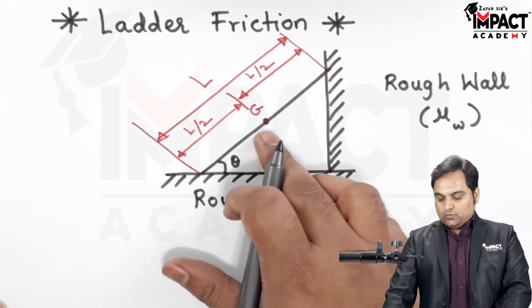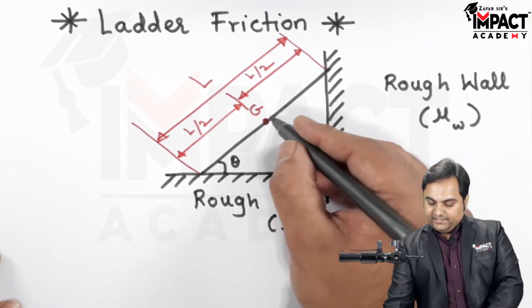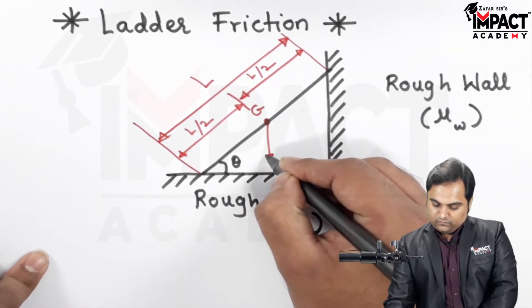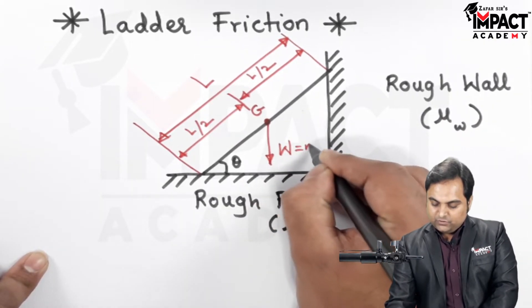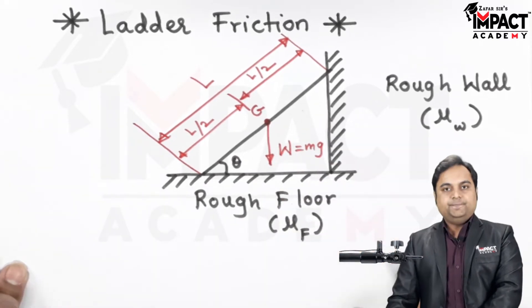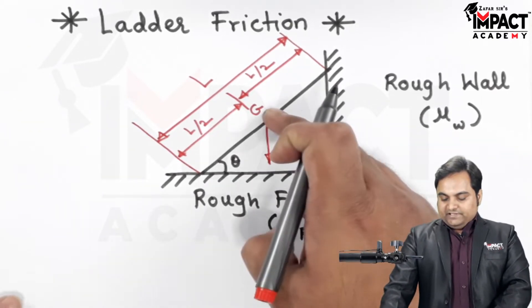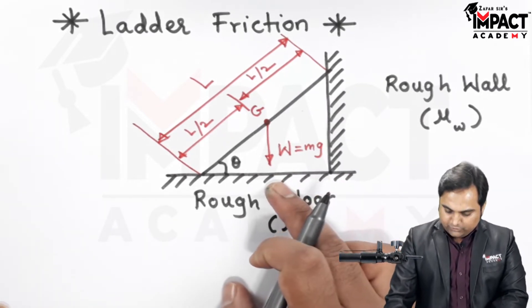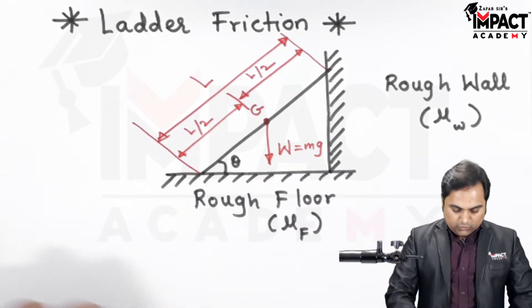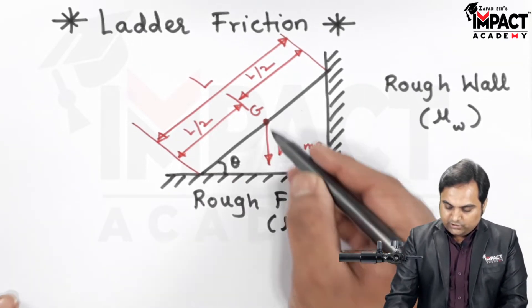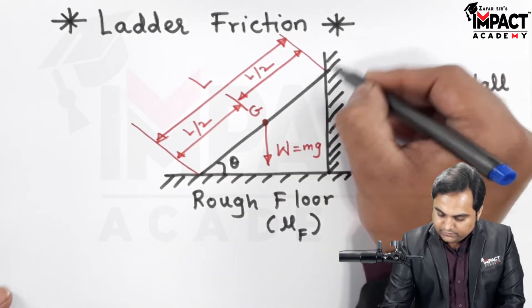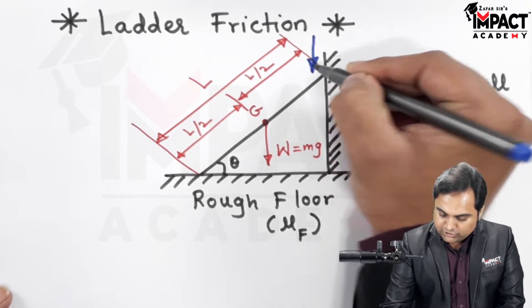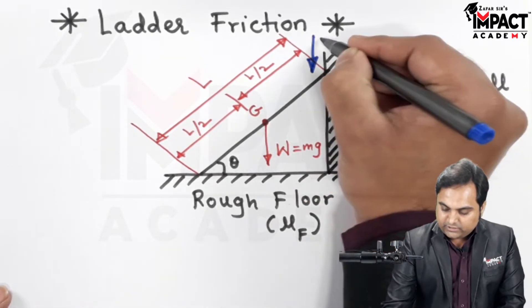Now this weight of the ladder would be acting in a downward direction, so weight is acting in the downward direction which is m into g. Because of the weight acting in the downward direction, there would be a force or we can say a motion which would try to slide down this ladder. So there is a downward motion due to the weight, it would try to slide down.